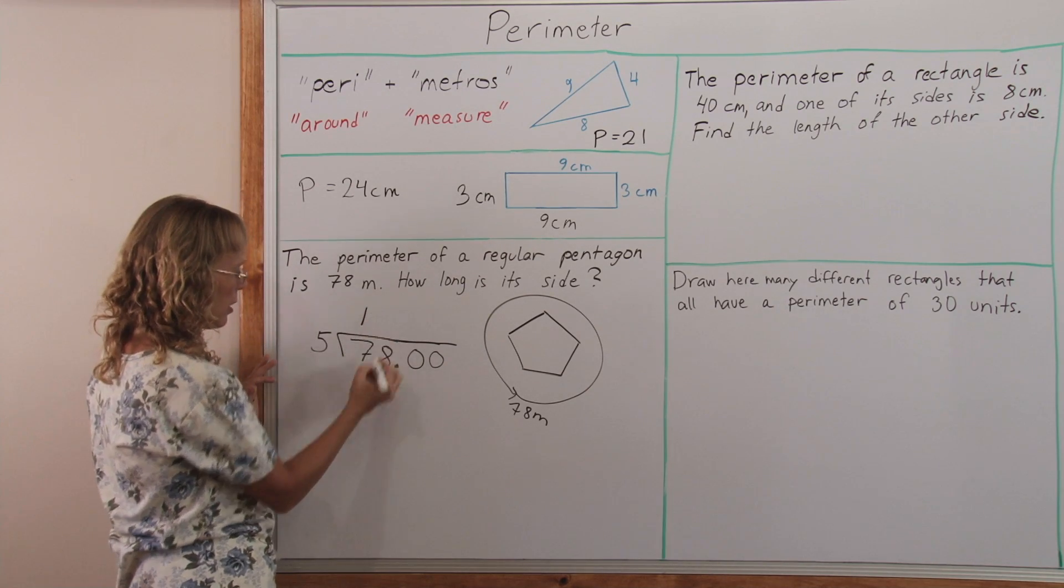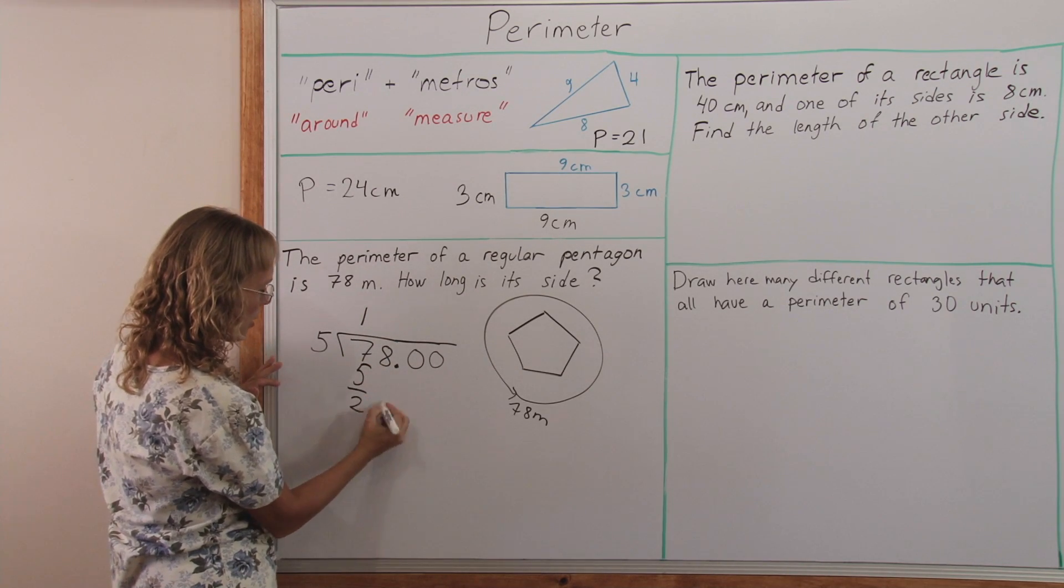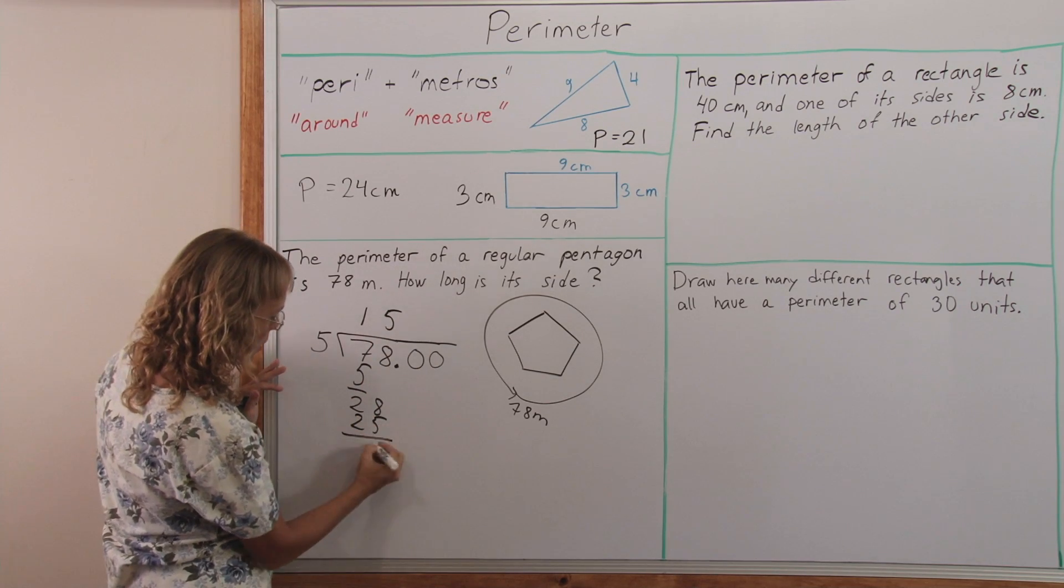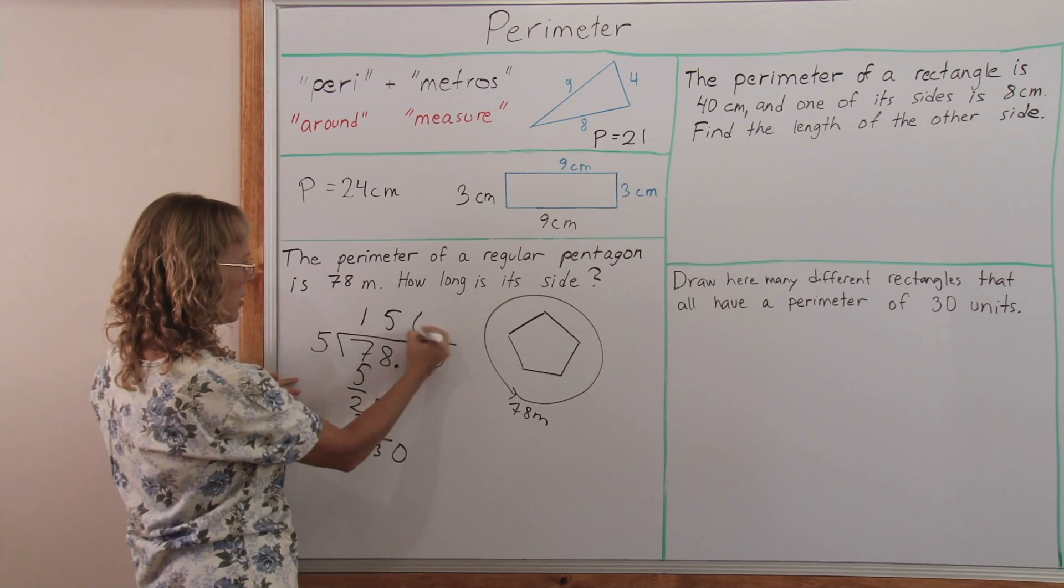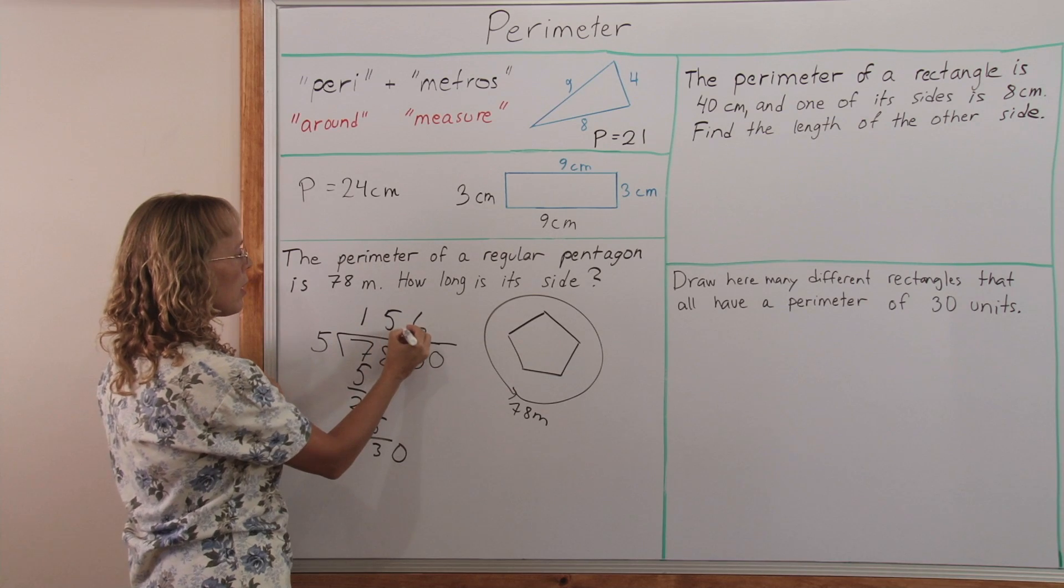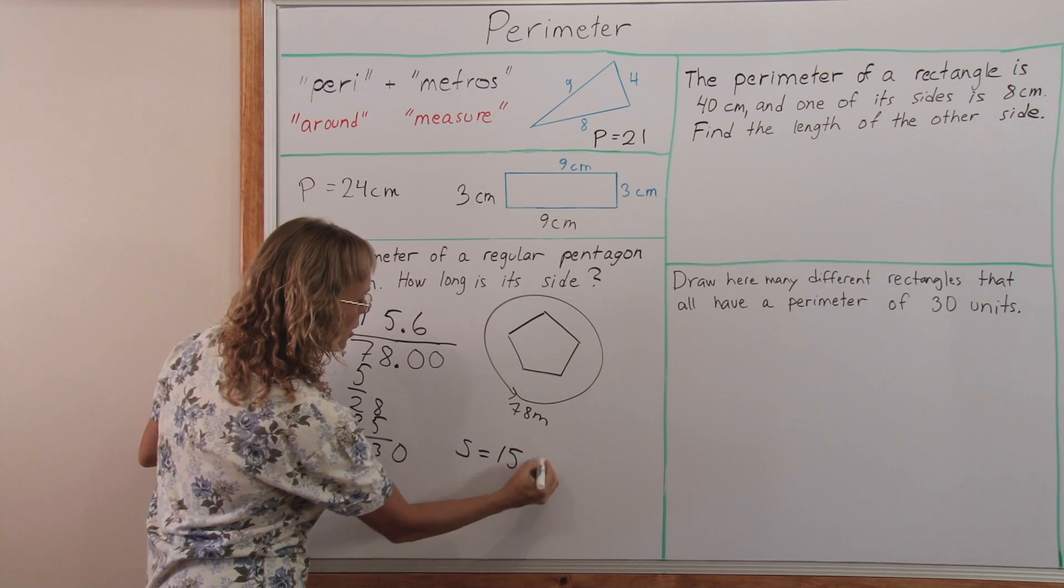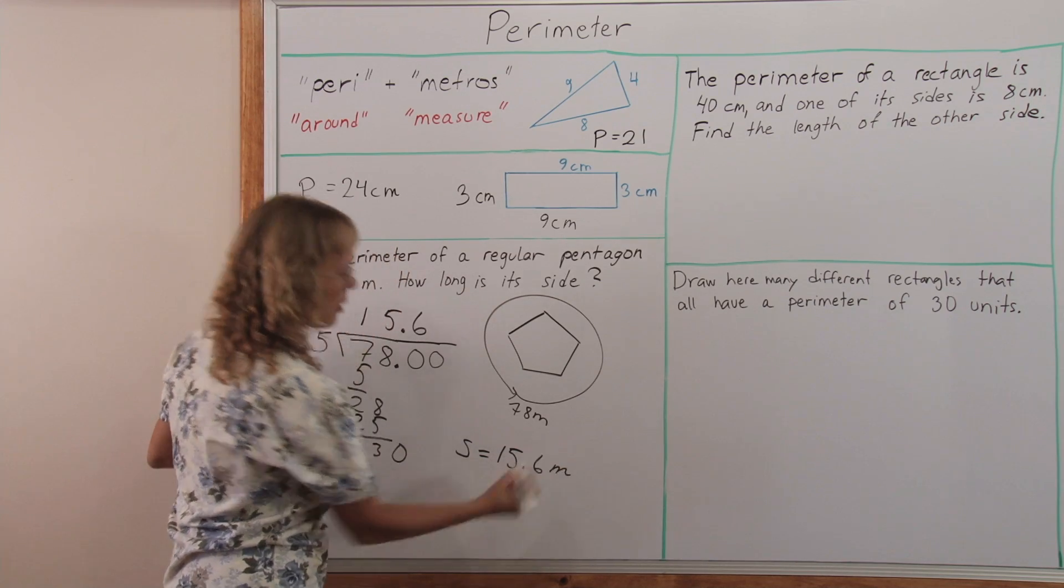5 goes to 7 once, subtract, and then 5 goes to 28 five times, subtract, and then 6. And now it's even. So my answer is that each side is 15.6 meters long.